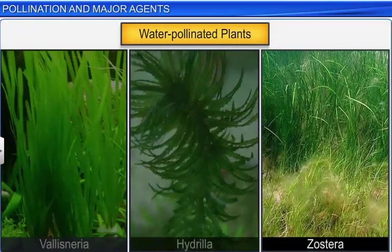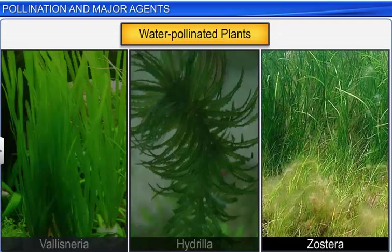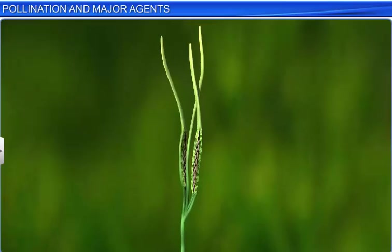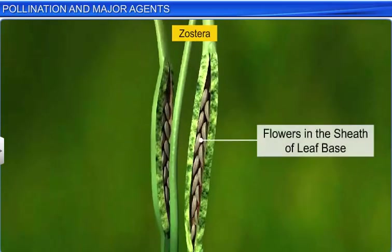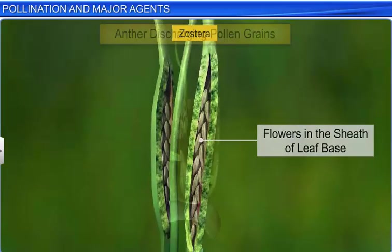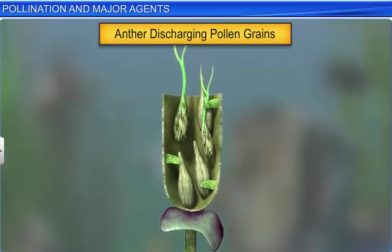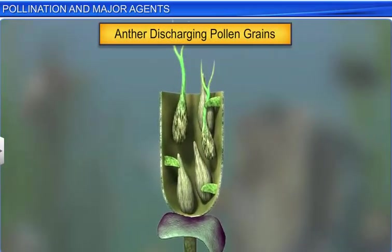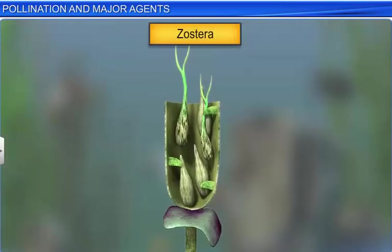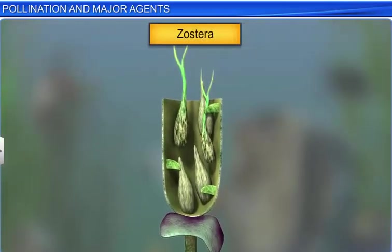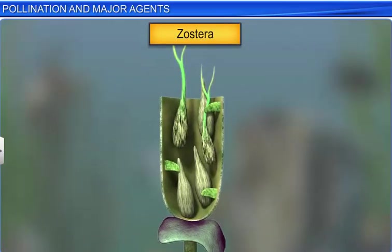In the case of Zostera, a dioecious seagrass, the male and female flowers remain submerged in water. The male flowers produce long and ribbon-like pollen grains which have a mucilaginous covering that protects them from getting wet. The pollen released in water is carried by water currents towards the submerged stigma, and thus pollination is completed.